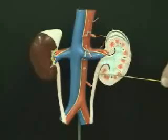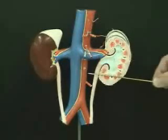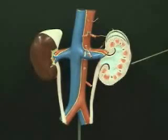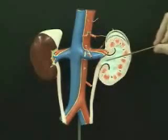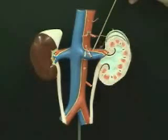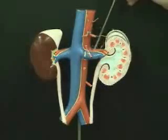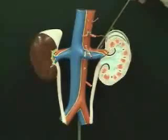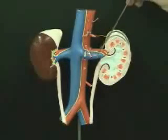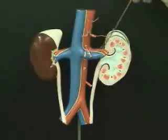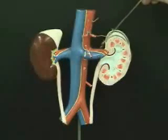There is a ureter for the right kidney and the left kidney. Notice at the hilum of the kidney we have the ureter leaving the kidney. The most anterior structure is the renal vein, then the renal artery. So the renal vein draining into the inferior vena cava will be anterior to the renal arteries.